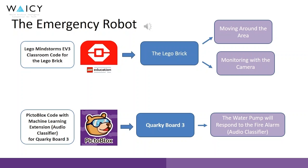For the emergency robot, we use a Lego brick and QR keyboard 3. For the Lego brick, we use Lego Mindstorms EV3 Classroom for the code. The Lego brick moves around the area and monitors with a camera. For the QR keyboard 3, we use the Pixoblux machine learning extension. The water pump will respond to the fire alarm.